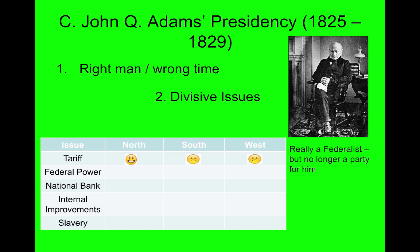On federal power: the North, being pro-business, wants a strong federal government to pass tariffs, create banks, and build the economy. But the South and West — composed mostly of common man farmers — distrust strong central government. They think it's controlled by eastern elites, and they want local government where the common man can have control. They believe in states' rights and strict construction, reserving most power for the states. On the national bank: the North loves it because businesses need large federal loans to grow industrially, but the South and West see it as serving only the rich and not helping common man farmers.